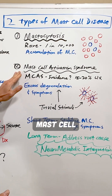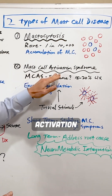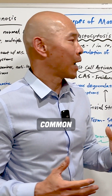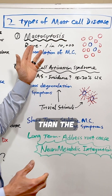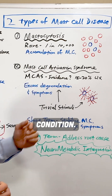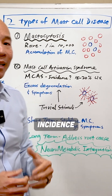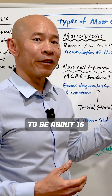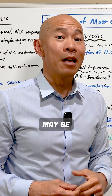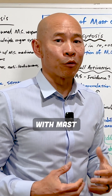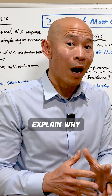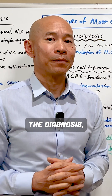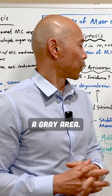The second type is called mast cell activation syndrome, or MCAS. This is much more common than mastocytosis, which is a rare condition. The incidence is unknown, but it's estimated that about 15 to 20% of the U.S. population may be suffering with mast cell activation. I'll explain why they don't know, because the diagnosis can be a little in a gray area.